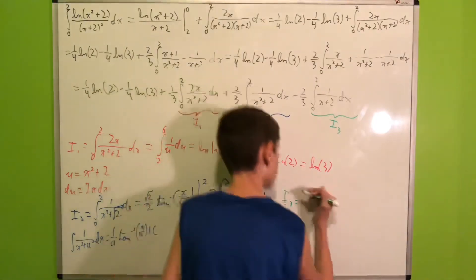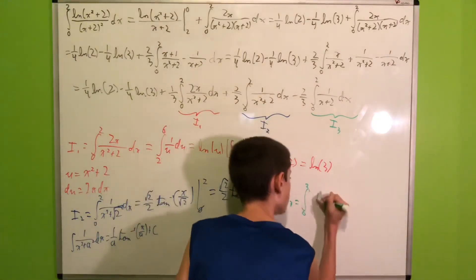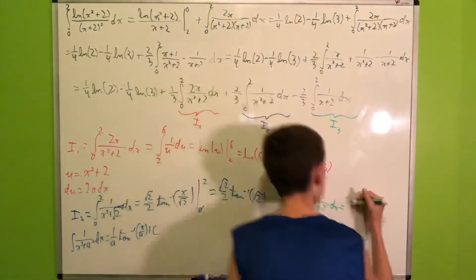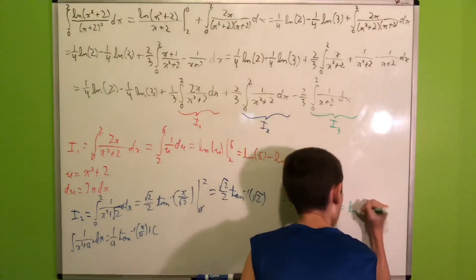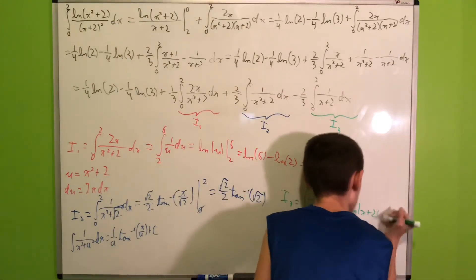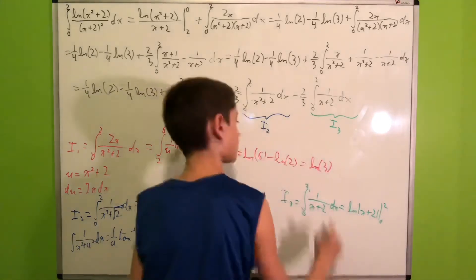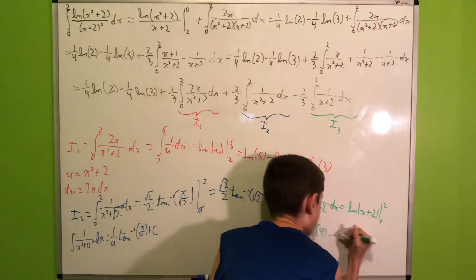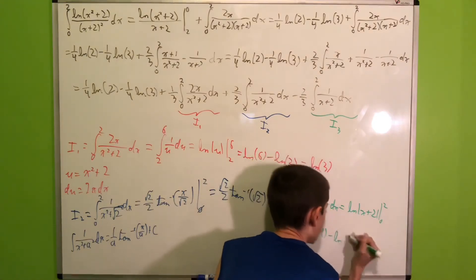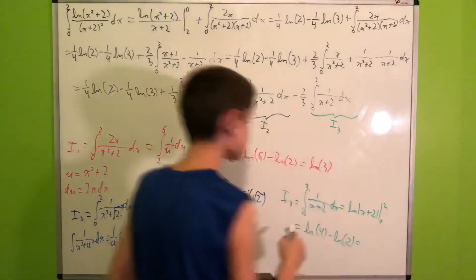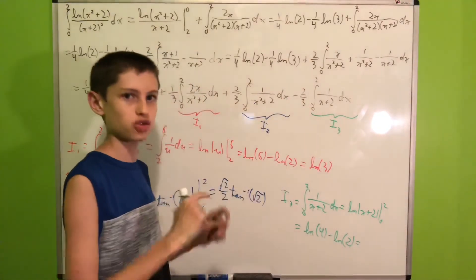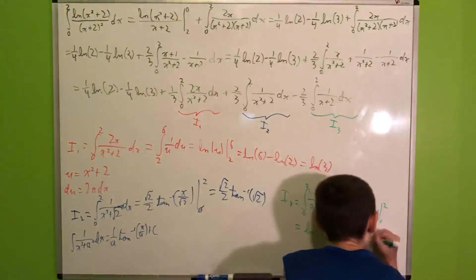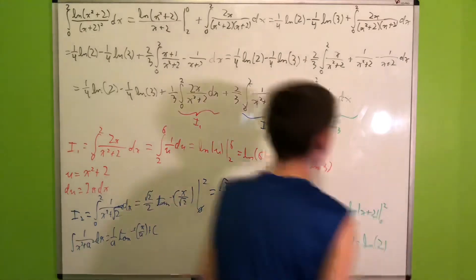For I3, we have the integral from 0 to 2 of 1/(x + 2) dx, which is just ln(x + 2) evaluated from 0 to 2. Plugging in, we get ln(4) − ln(2) = ln(4/2) = ln(2).